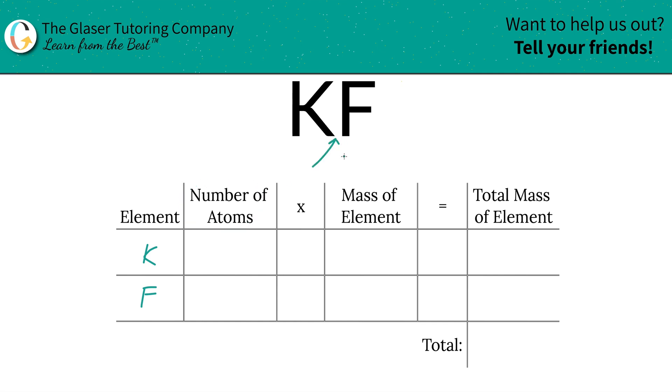Next, to identify the number of atoms, that's where the subscripts come into play. If there are no subscripts, it's assumed to be one. So we have one of each.